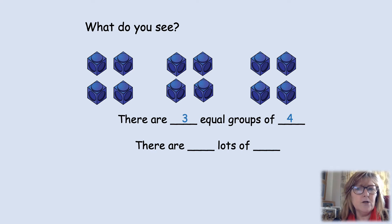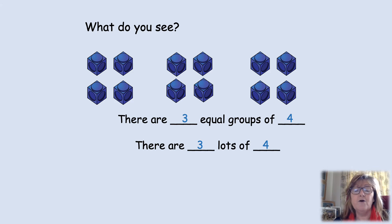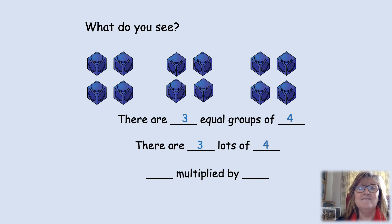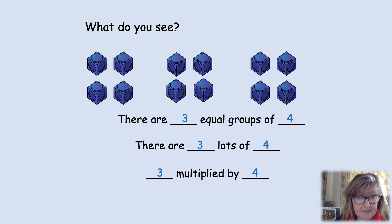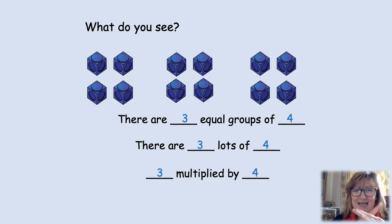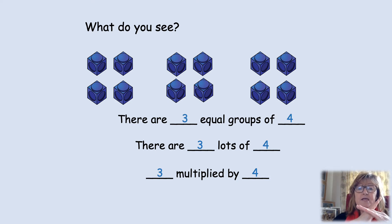So, how many lots of four are there? There are three lots of four. That's right. We've got two different ways of explaining that image: there are three equal groups of four, and there are three lots of four. Is there another way? We can say three multiplied by four, because we've got three groups of four. So, three times four — the word 'multiplied' is the same as the multiplication symbol, 'times'. Three multiplied by four. Three times four.